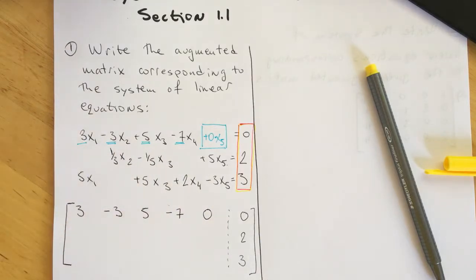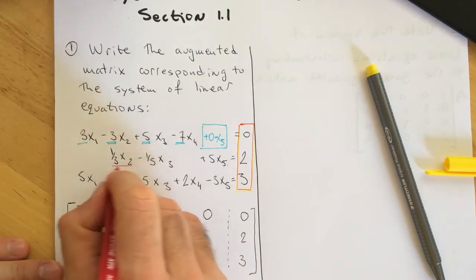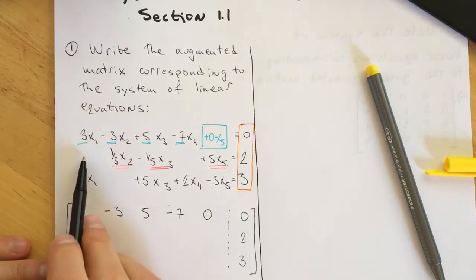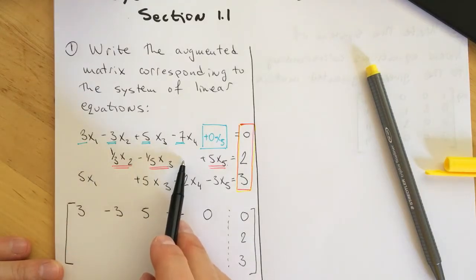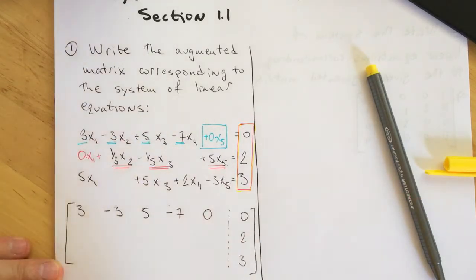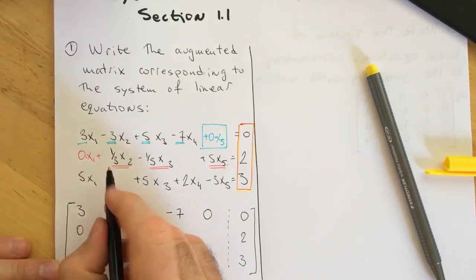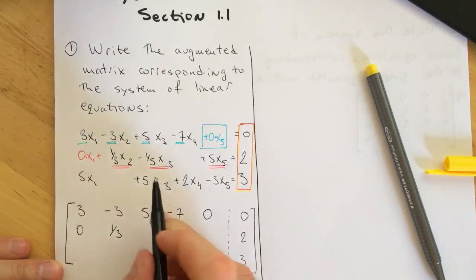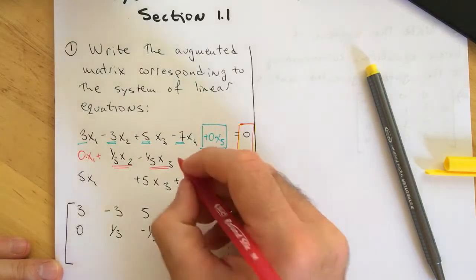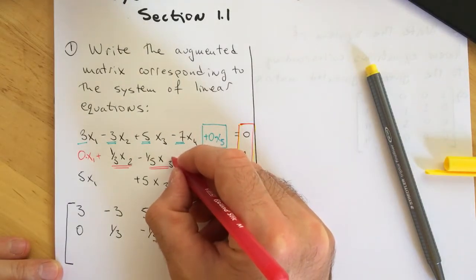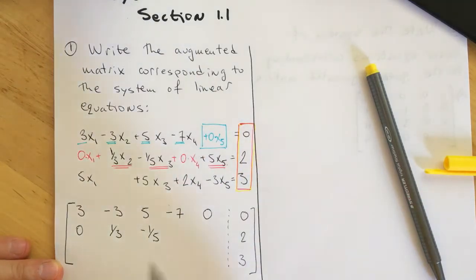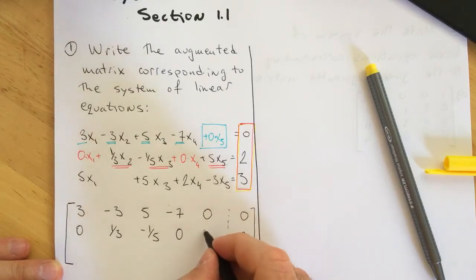Similarly, in the second equation we have only three variables, which means x1 and x4 are simply multiplied by 0. So the first coefficient is 0. The second coefficient is positive 1/3. The third coefficient is negative 1/5. The fourth variable is missing, so its coefficient is 0, and the last coefficient is 5.